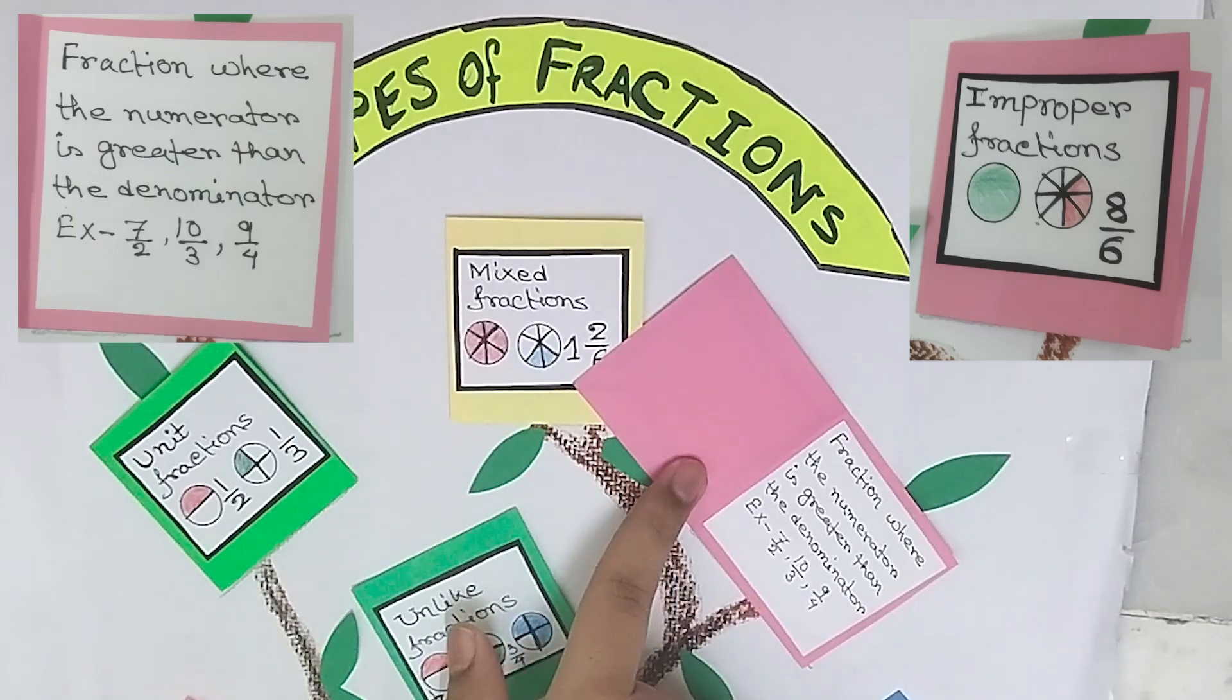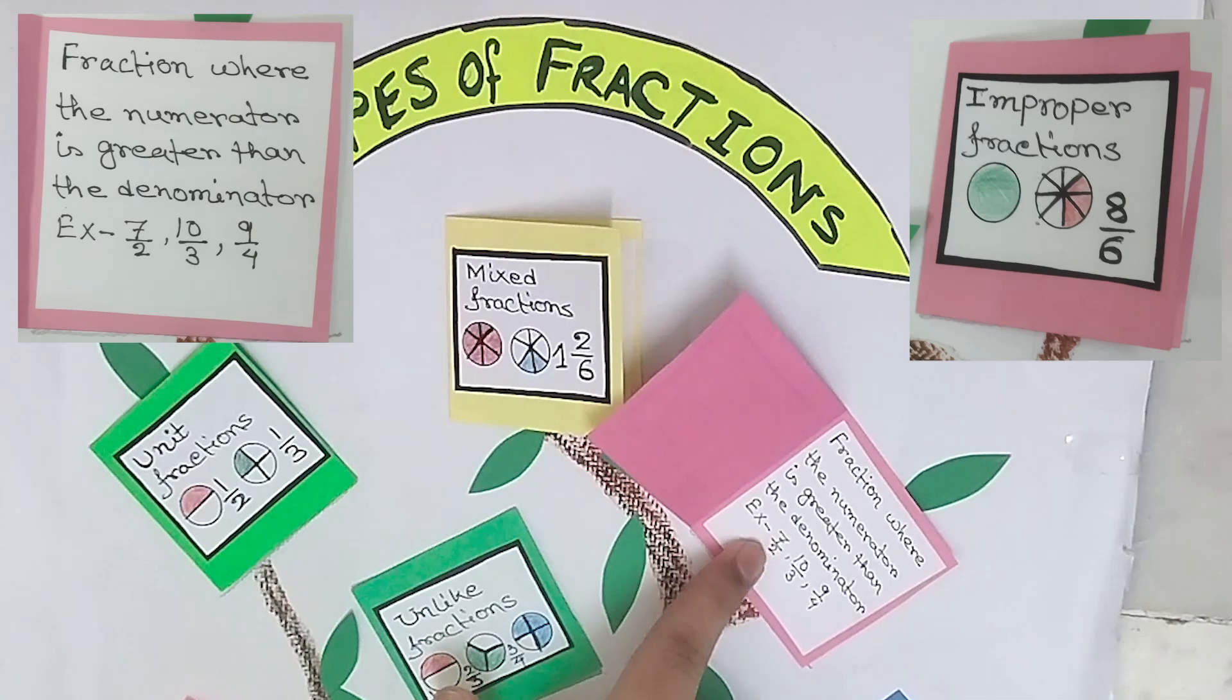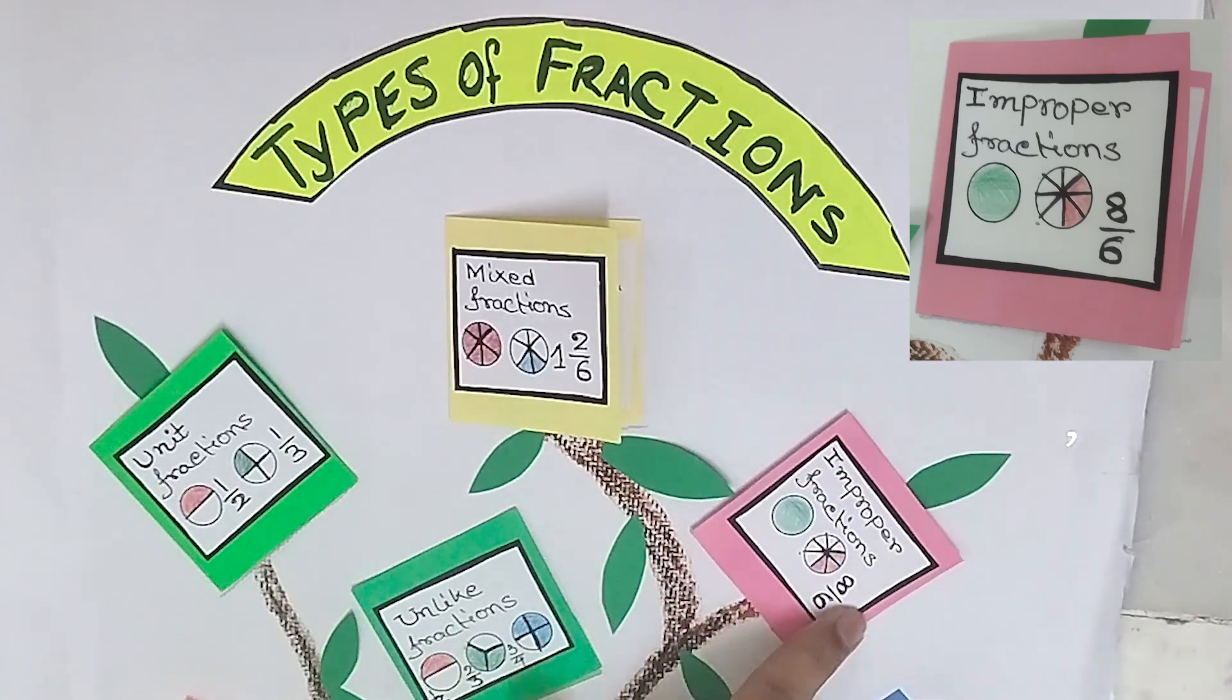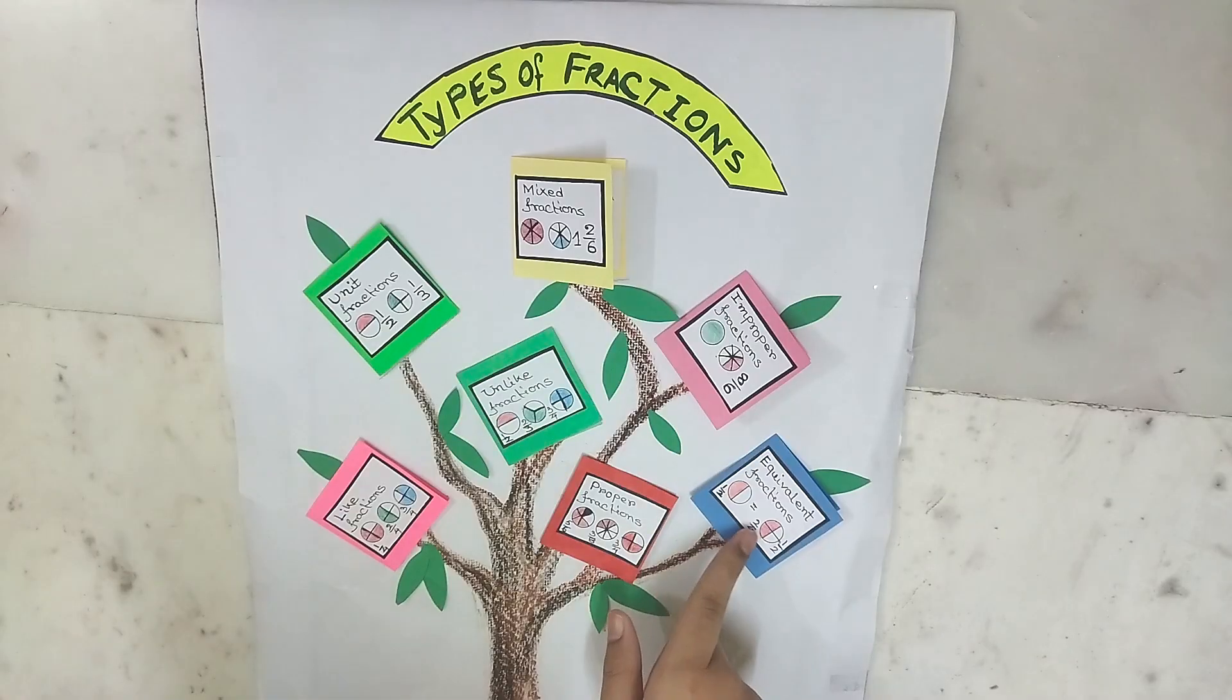Improper fractions. Fractions where the numerator is greater than the denominator. Example: seven by two, ten by three, nine by four, and here we have eight by six.